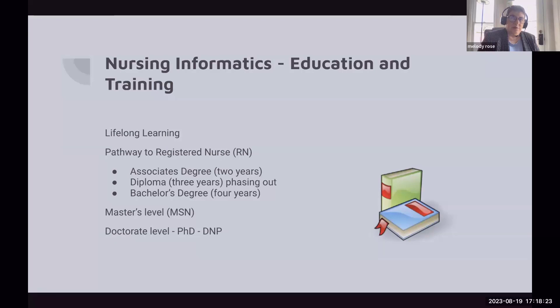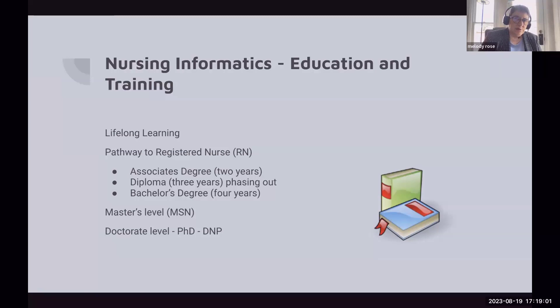In the United States, the RN is licensed at the state level. Some states are compact states and accept the licensure of other states; others do not. To practice in any state for a length of time, the RN must obtain a license in that state. For example, I live in Tennessee, which is a compact state. If I wanted to work in North Carolina for a year, I would need to apply for a North Carolina nursing license. Additional education comes at the master's degree level, where a specialty needs to be declared — and fortunately for me, nursing informatics became one of those specialties.